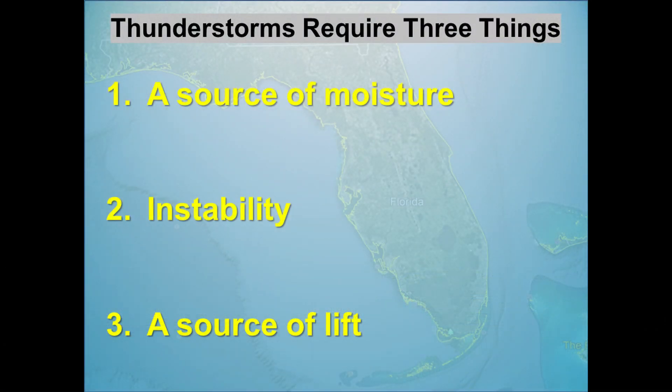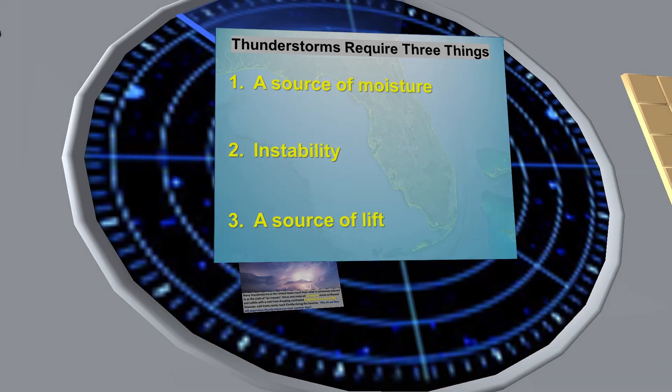Thunderstorms require three ingredients in order to form: one, a source of moisture; two, instability in the atmosphere; and three, a source of lift.